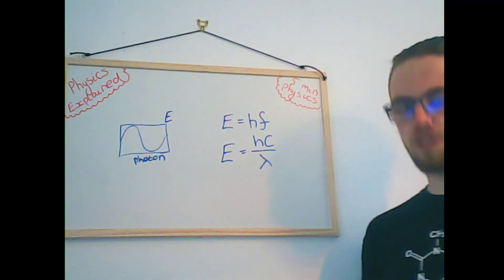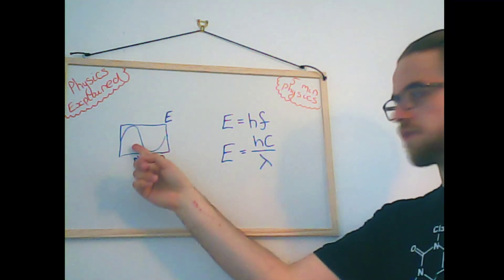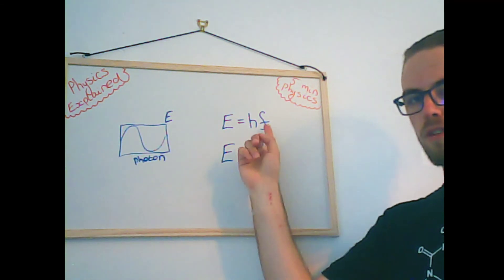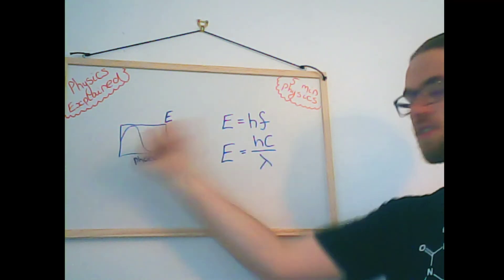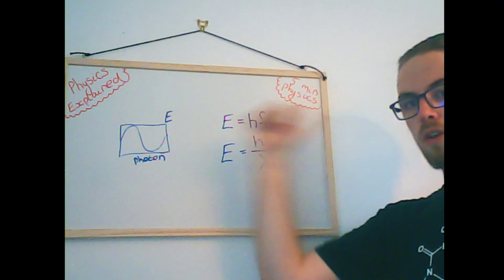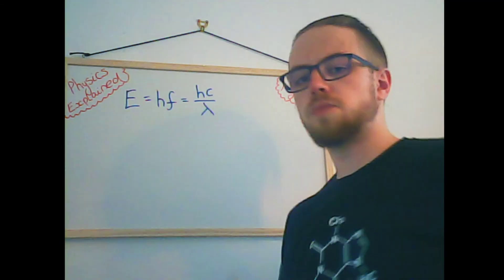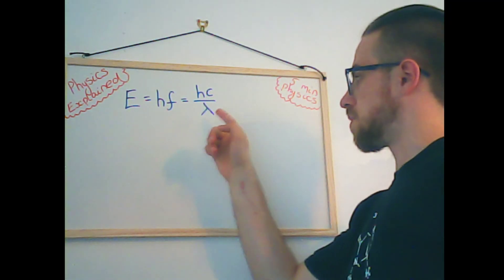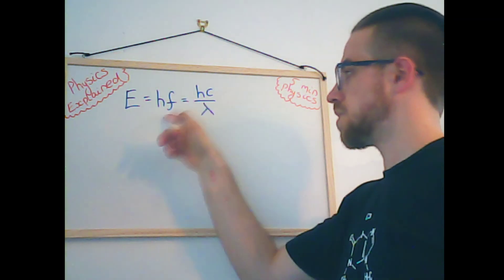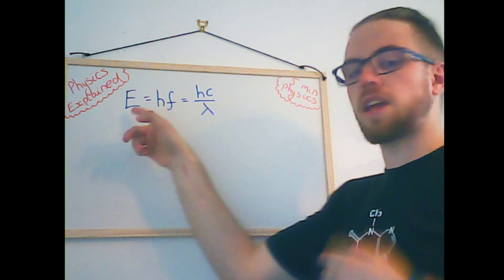Now if you think about it, this sort of makes sense. The shorter the wavelength, the higher the frequency. Because the shorter the wavelength at the same speed, the more you're going to get through in a second. So what we're saying here, guys, is that if the wavelength decreases and the frequency increases, then our photon has more energy.